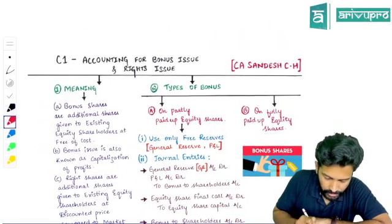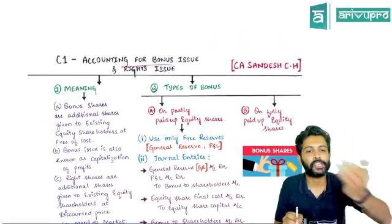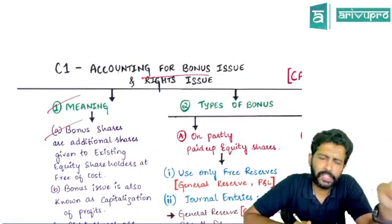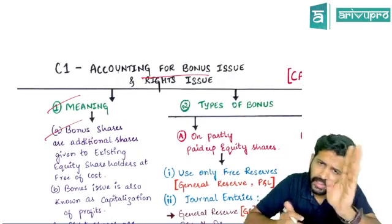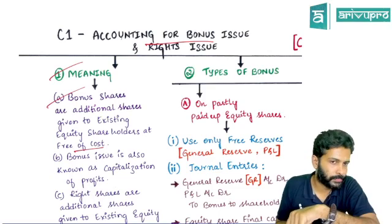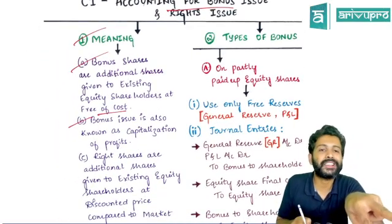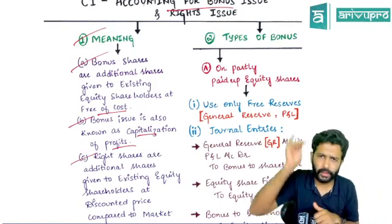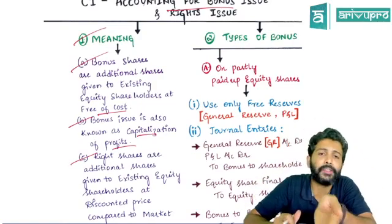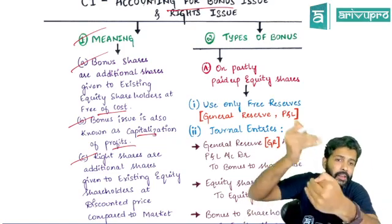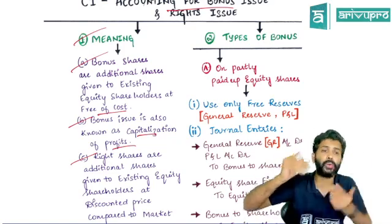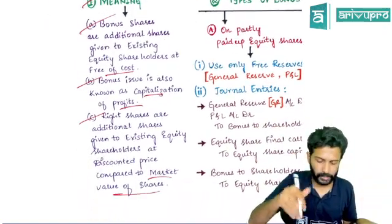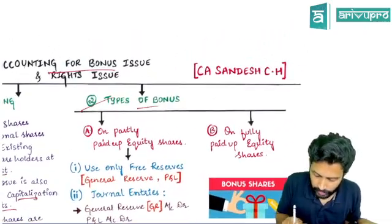Let's quickly revise the first chapter: accounting for right shares and bonus shares with the help of our chart book. Bonus shares means additional equity shares given to existing shareholders free of cost. Bonus shares is also known as capitalization of profits. Right shares means additional equity shares given to existing shareholders but at a discount compared to the market value of the share.